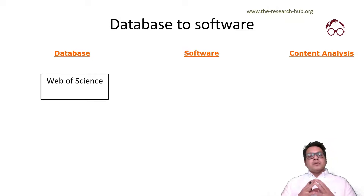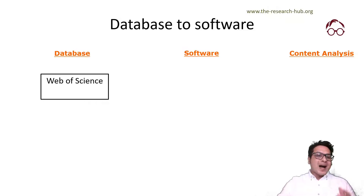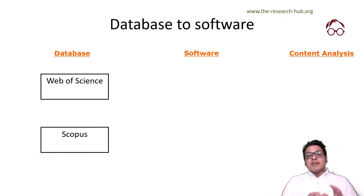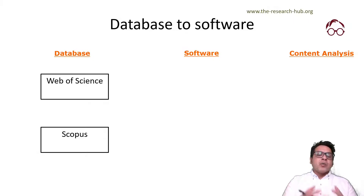There are several databases. The most widely used one is the Web of Science database, or ISI Web of Science database, and we have the Scopus database. You have to remember that to access these databases you need institutional access — they are not free to use, and most universities in developed countries have access to these two databases.